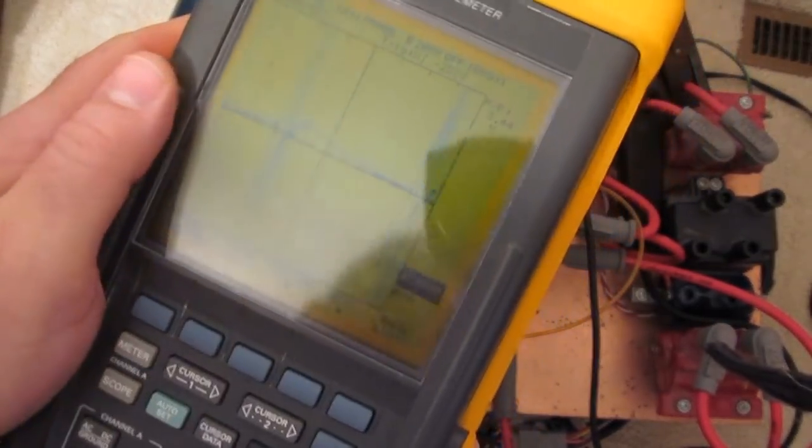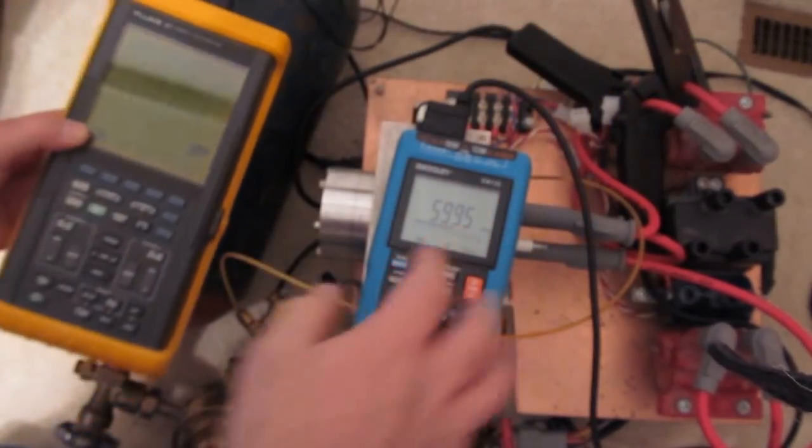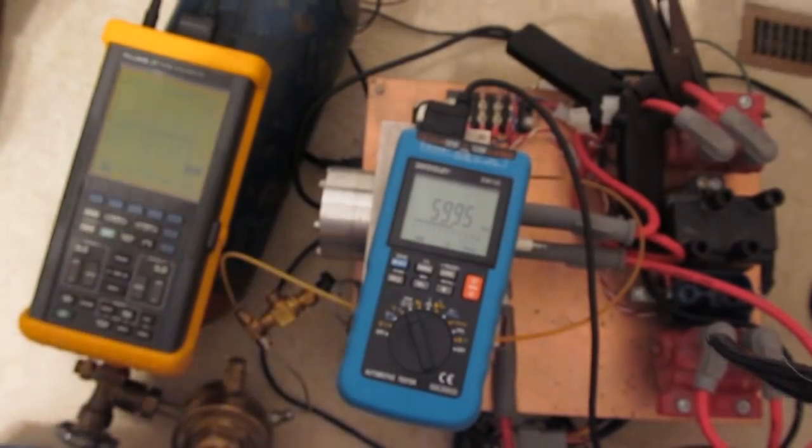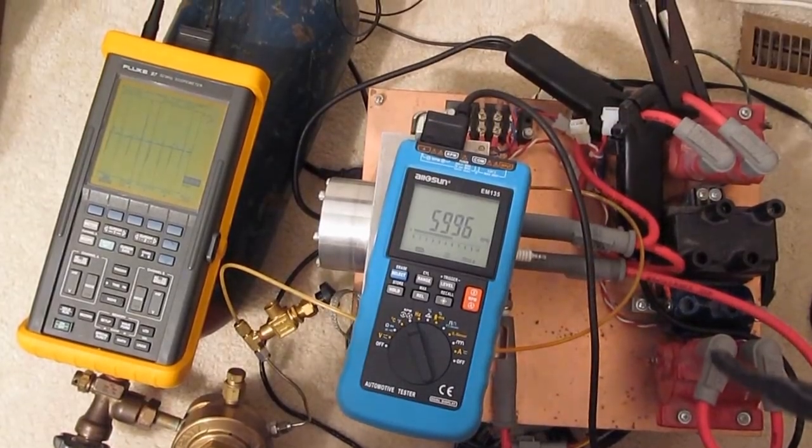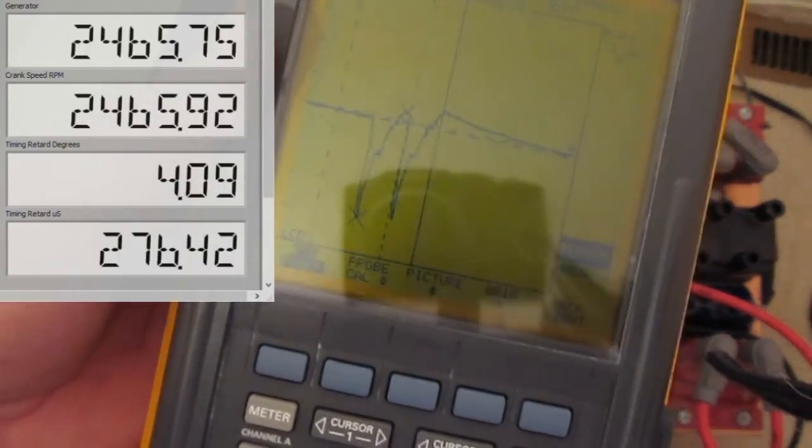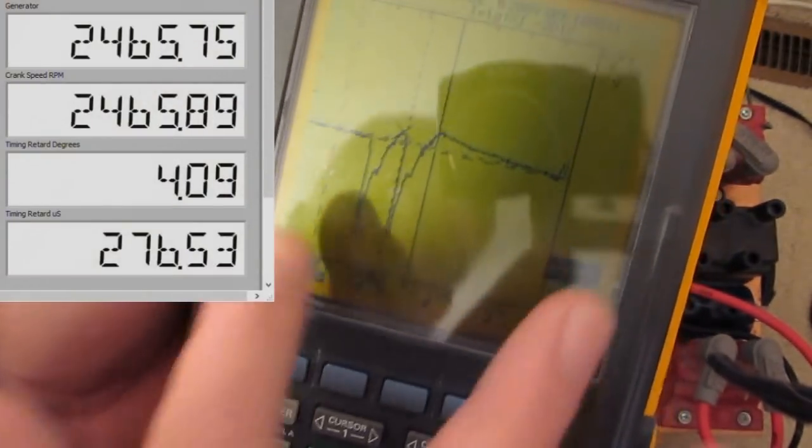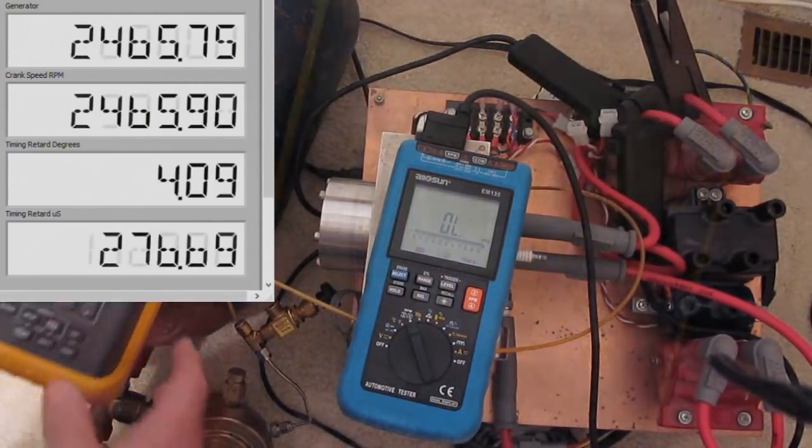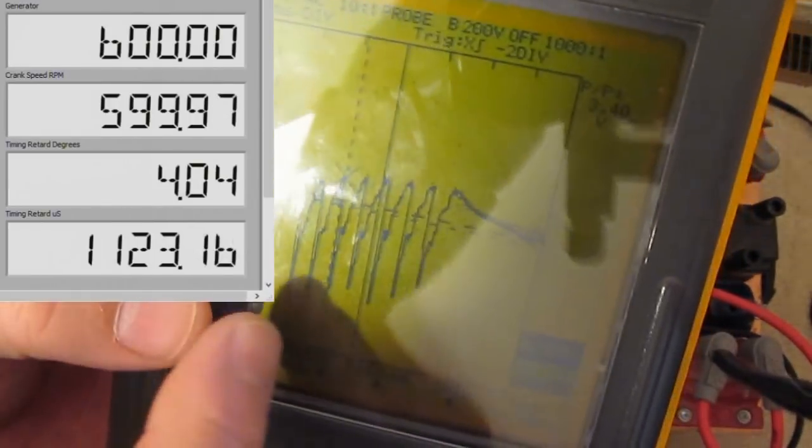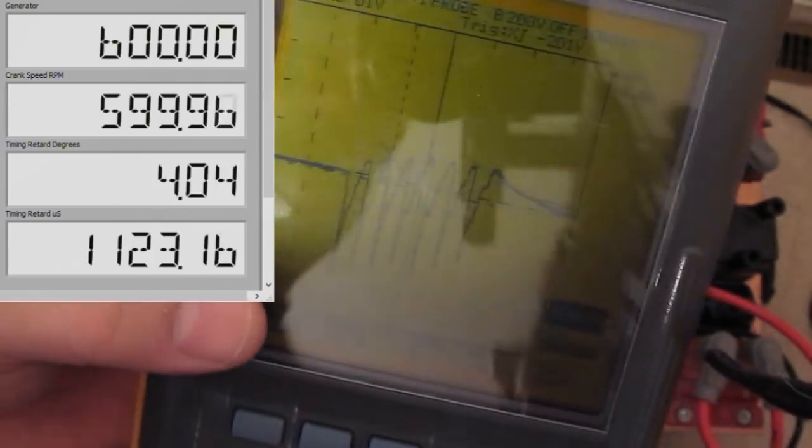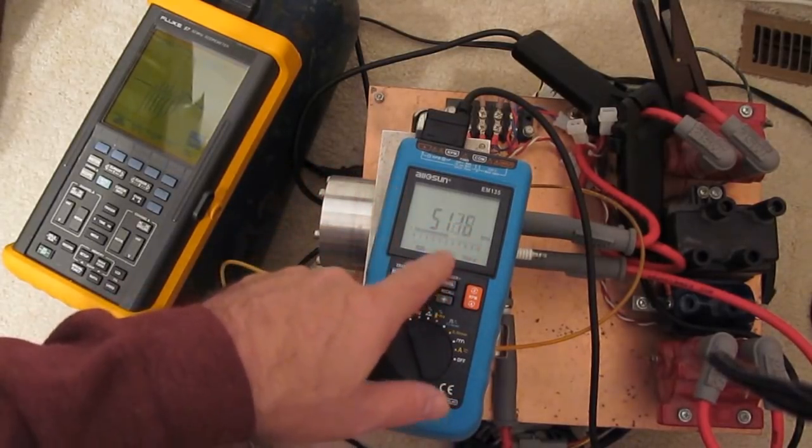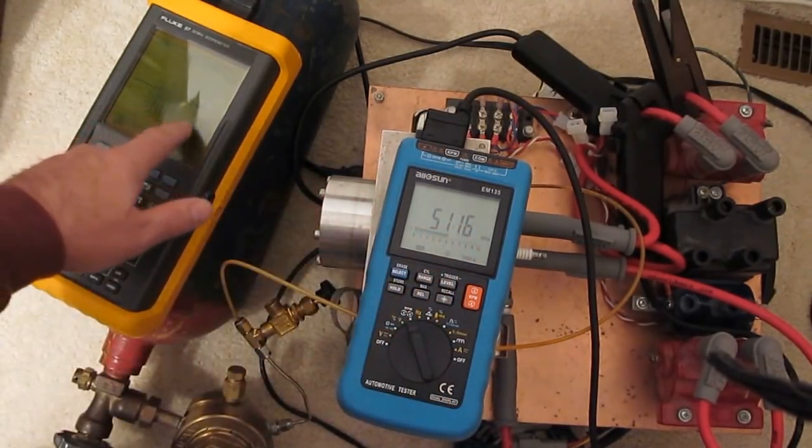The EM-135 can read this because there's only one ignition pulse per cycle. Slowing the ignition to 2500 RPM shows two pulses. At 600 RPM, seven separate ignition pulses appear. While the RPM reading is stable, it's incorrect due to multi-spark.